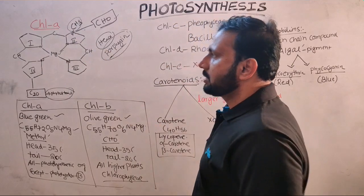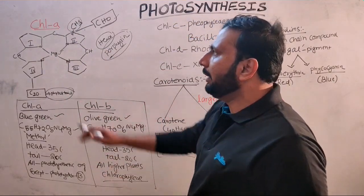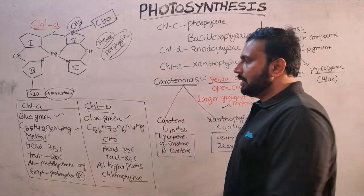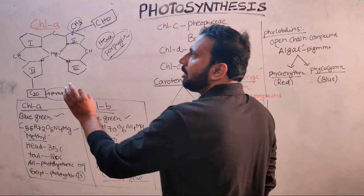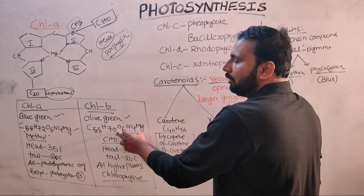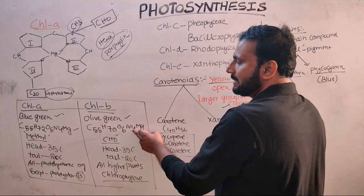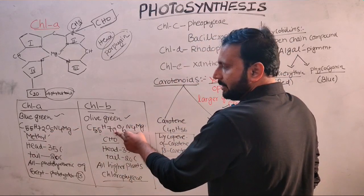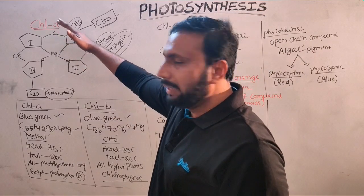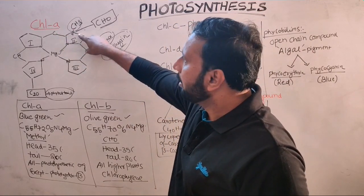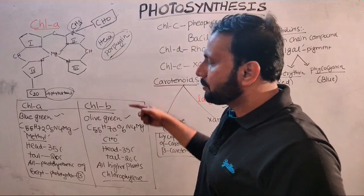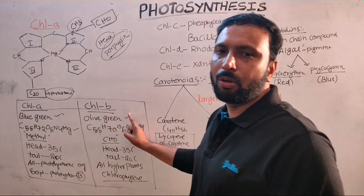Chlorophyll a is blue-green in color, while chlorophyll b is olive green in color. The formula of chlorophyll a is C55H72O5N4Mg, whereas chlorophyll b is C55H70O6N4Mg — differing in H72 vs H70, and O5 vs O6. The reason for this difference is that in chlorophyll a, the third carbon of the second pyrrole ring has a methyl group, whereas in chlorophyll b, an aldehyde group is present at the same position.